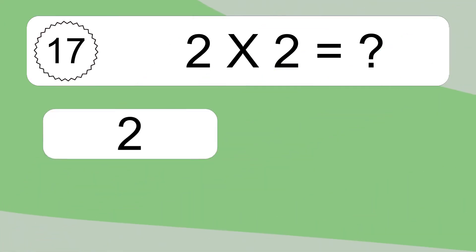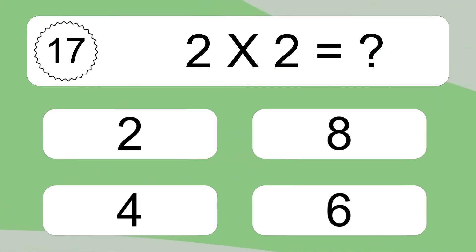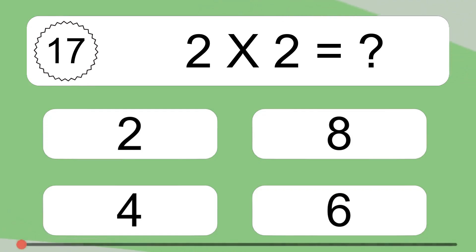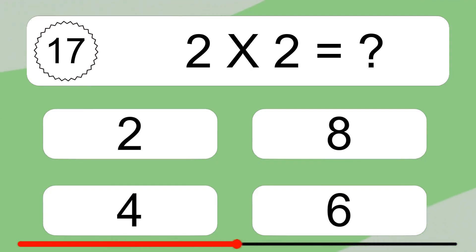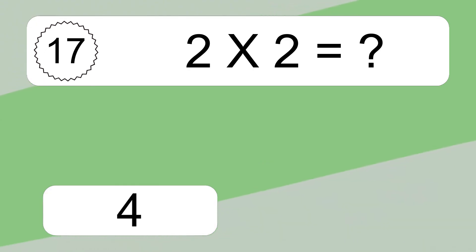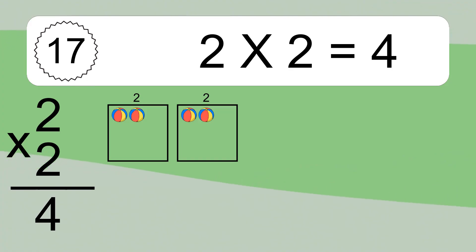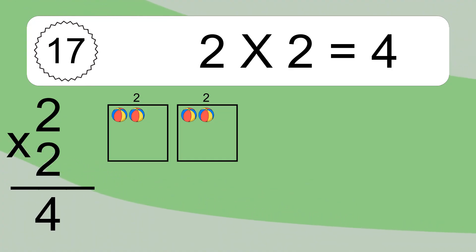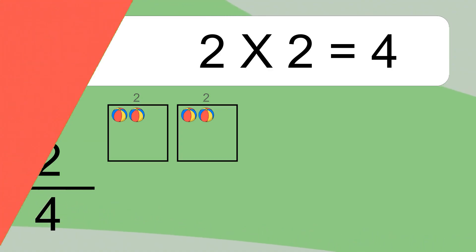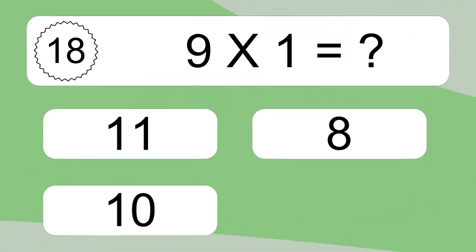2 times 2 equals what? We have 2 boxes, and each box has 2 colorful balls inside. If you count all the balls in all the boxes together, you will have 2 times 2 balls. This equals 4 balls.